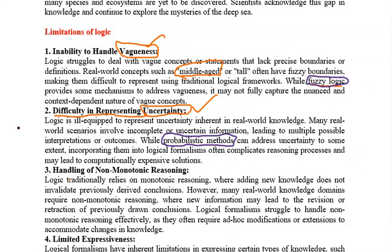The next limitation is handling non-monotonic reasoning, which I will also explain in upcoming videos. Logic traditionally relies on monotonic reasoning, where adding new knowledge does not invalidate previously derived conclusions. When we add new information to an already derived and concluded theory, the question is whether that existing conclusion will remain valid or become invalid.